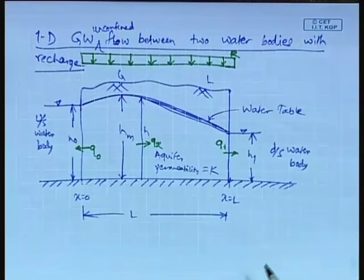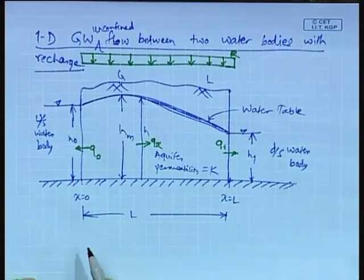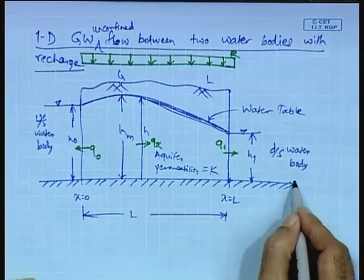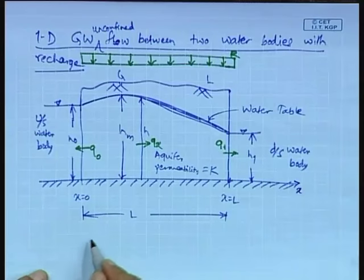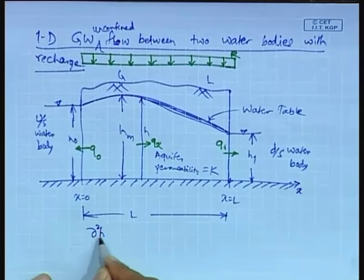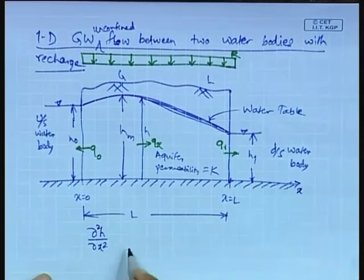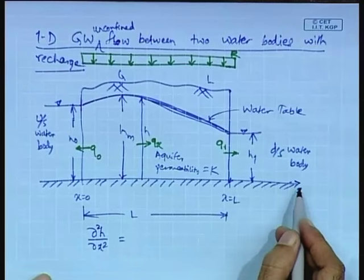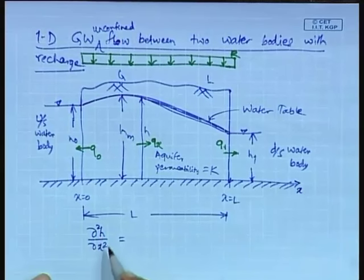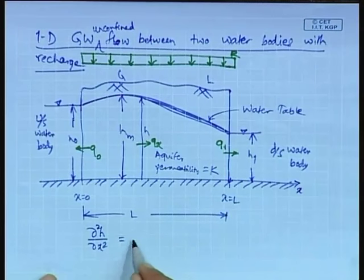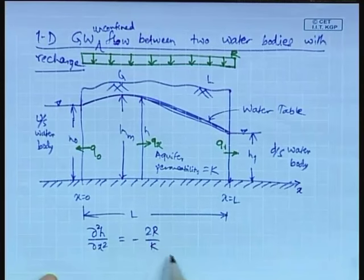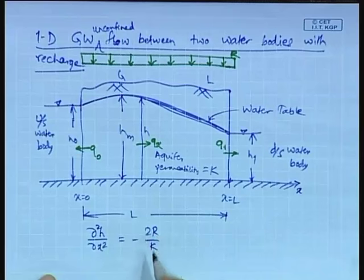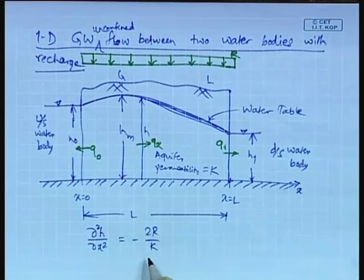When there is a 1D groundwater flow, the flow is in the x-direction. The governing equation will be d²h/dx², and since the flow is only in the x-direction, the second-order partial derivative terms in the y and z directions will not be there. This equals minus 2R/K, where R is the rate of recharge in the vertically downward direction and K is the aquifer permeability or hydraulic conductivity.